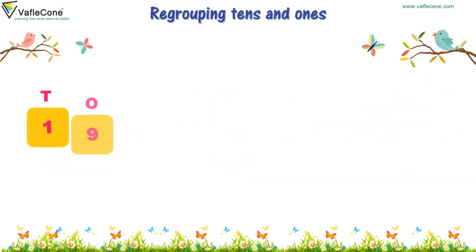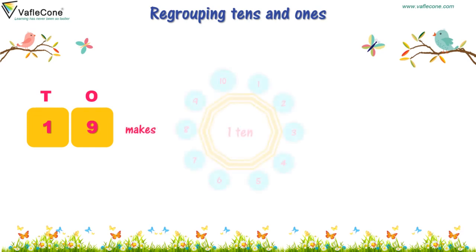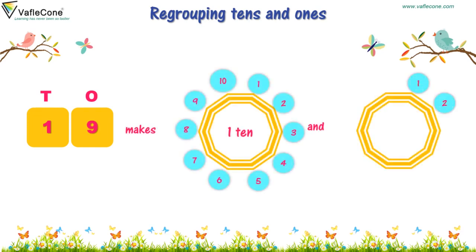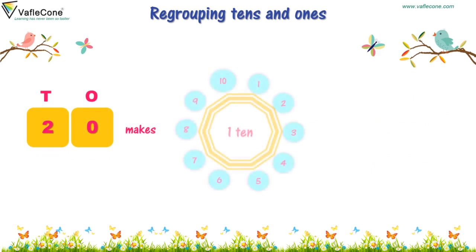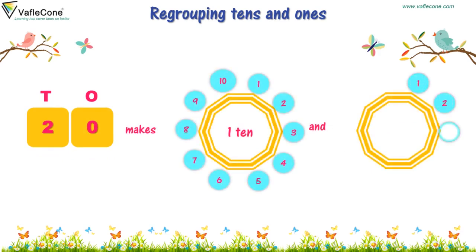Nine, nine — nineteen makes one ten and one, two, three, four, five, six, seven, eight, nine. Nine, one. Two, zero — twenty makes one ten and one, two, three, four, five, six, seven, eight, nine, ten. Ten, one.